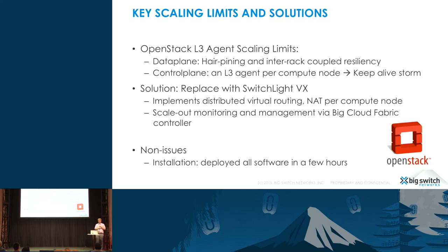If you have VM-A in one network and VM-B in another network, and they're connected by a logical router, in traditional OpenStack networking that L3 agent could be somewhere else, and you might have hairpinning. The thing that's particularly bad about hairpinning — maybe you can over-provision and have lots of L3 agents — is it causes these weird correlated error conditions. If a rack that's not involved with the compute nodes goes down, maybe it takes your L3 agent with it, and then you have these weird issues.